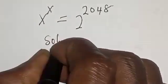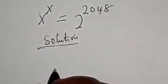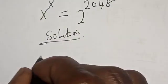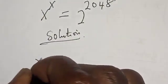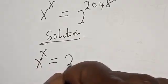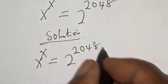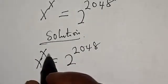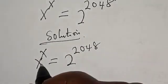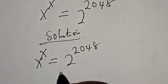Solution. The given equation is s raised to power s is equal to 2 raised to power 2048. We don't know the value of s, so we have to work with the right-hand side.